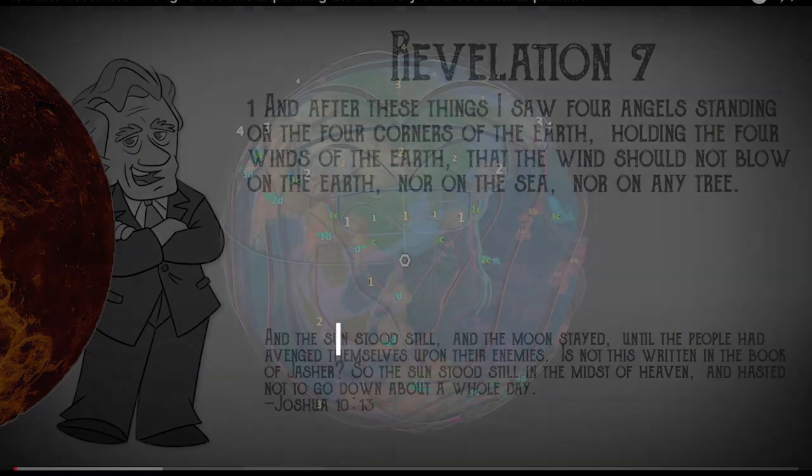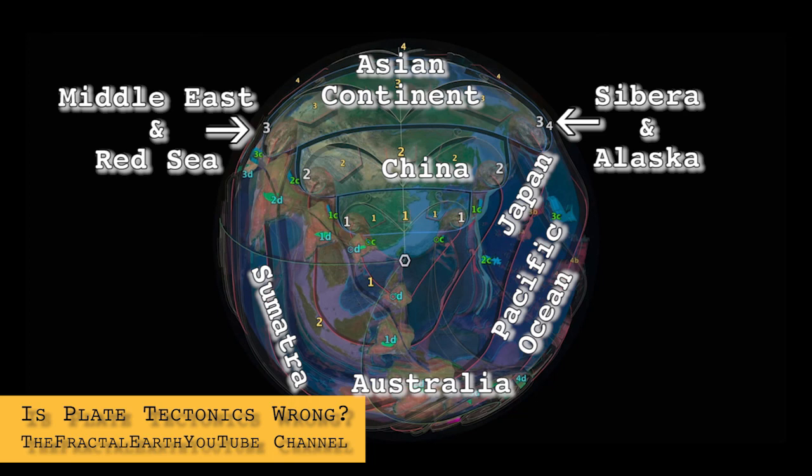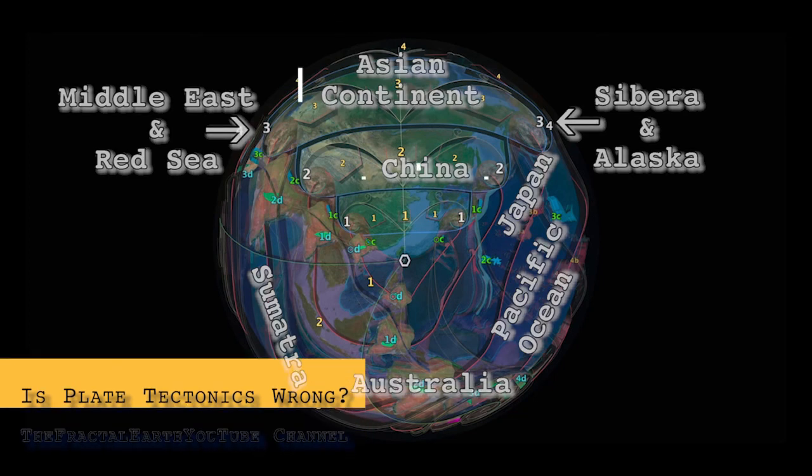How the four parts fit together, however, is best explained by the fractal shapes left in the crust, as illustrated here by the fractal Earth channel.